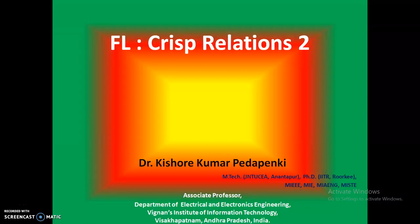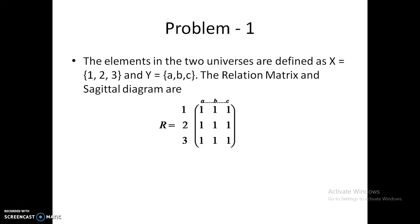This is a continuation from the previous video. This is the first problem: two sets have been given and we need to find the relationship matrix and circuit diagram. The relationship matrix is simple — we write the elements of the first set on the left side, like 1, 2, and 3, and the elements of the second set on the top, like a, b, c. A value of 1 indicates a relationship exists; for example, between element 1 and element b, the value is 1.